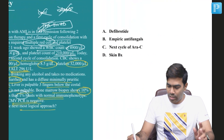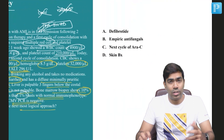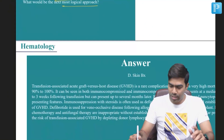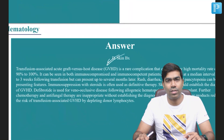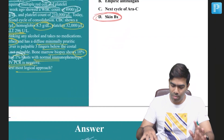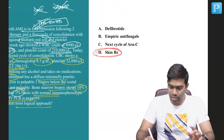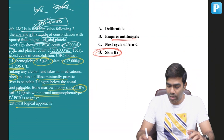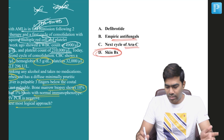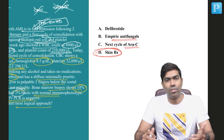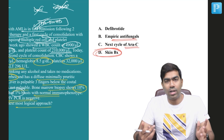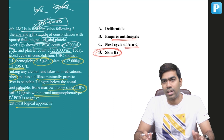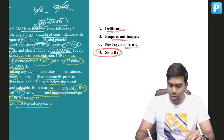The next logical approach is skin biopsy, which will confirm that the patient is suffering from transfusion-associated graft-versus-host disease. Empirical antifungals are not indicated because fungal infection or invasive aspergillosis is not suspected. The next cycle of consolidation therapy can continue, but you need to address the primary issue — transfusion-associated GvHD, which is very difficult to treat and has a 90 to 100 percent mortality.